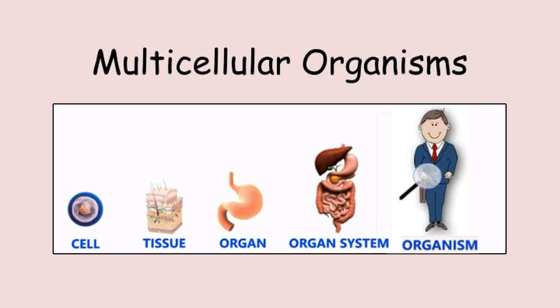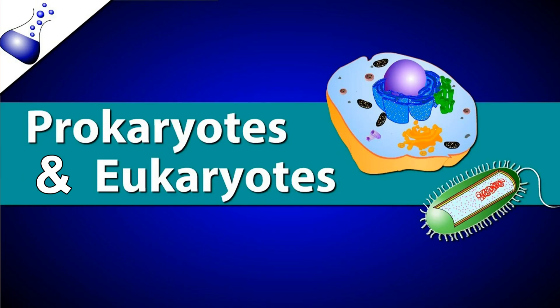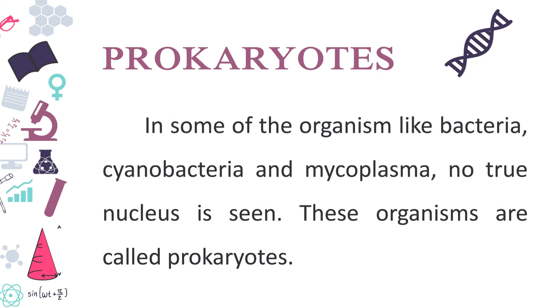The body has different levels of organization: cells make up tissues, tissues make up organs, and organs make up organ systems. Based on structural organization, organisms can be classified into prokaryotes and eukaryotes.